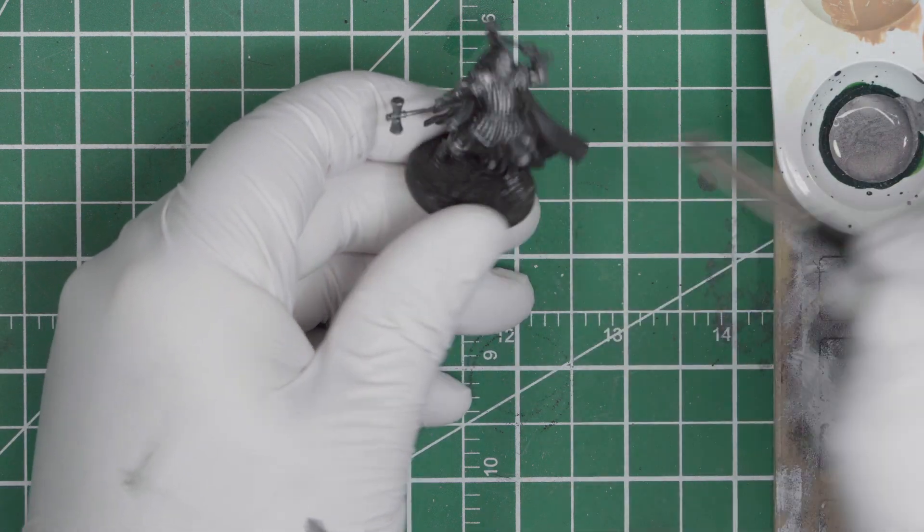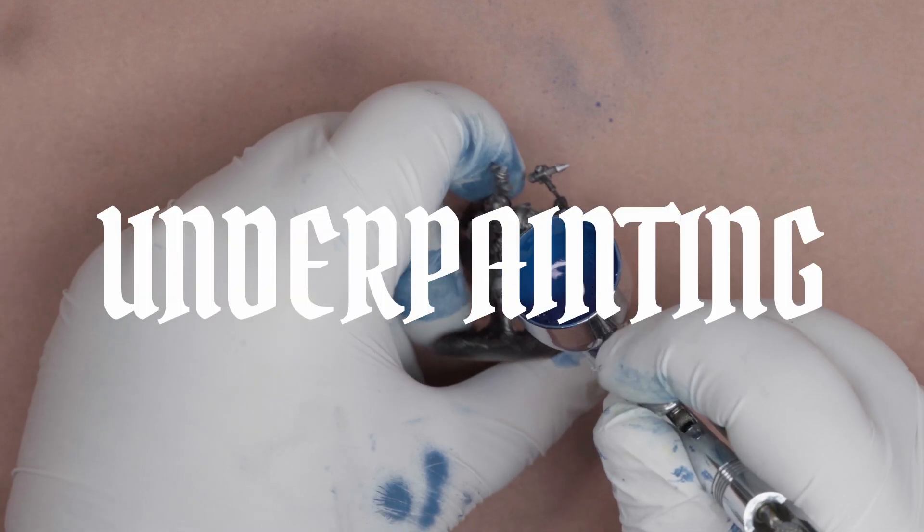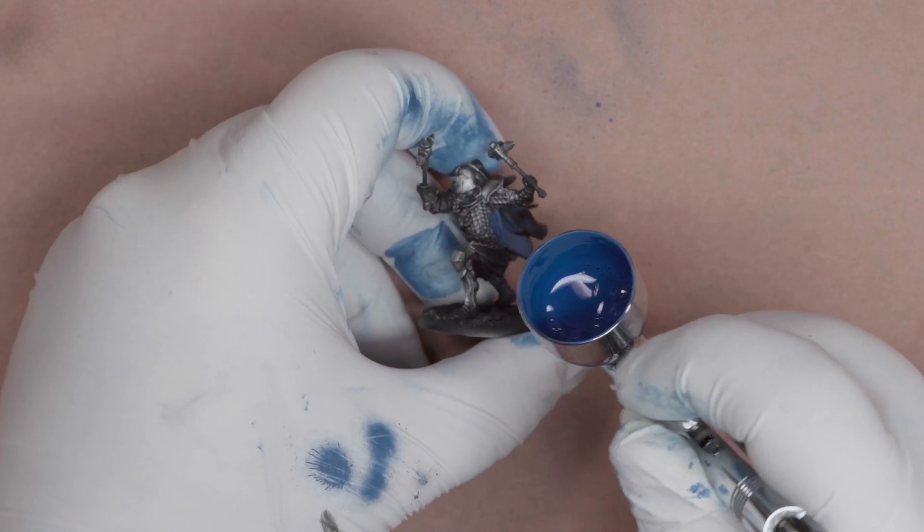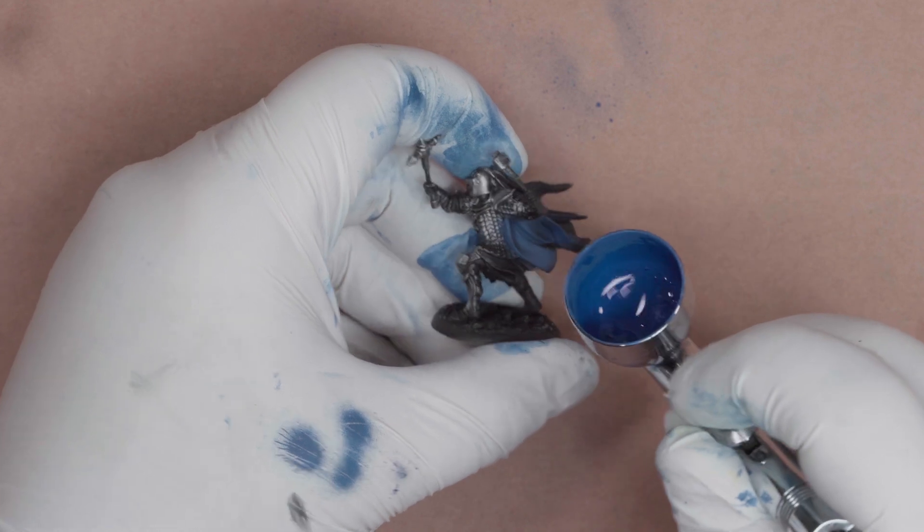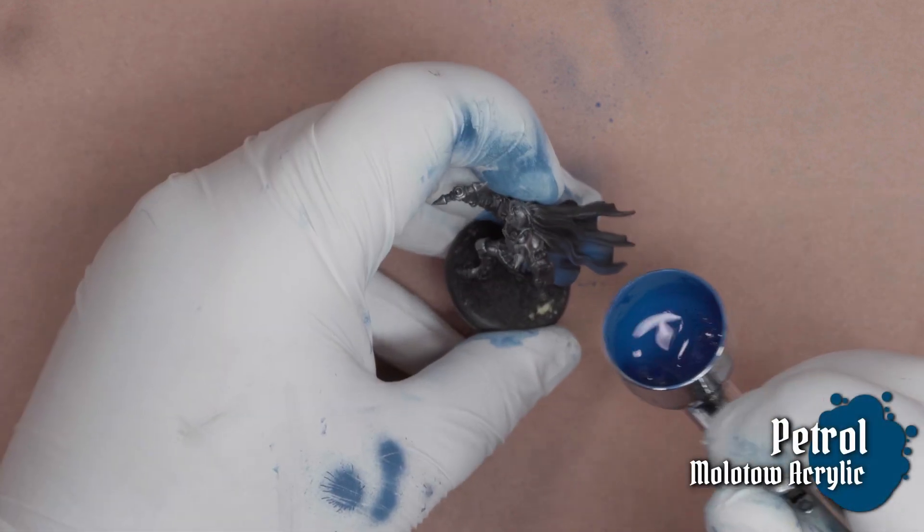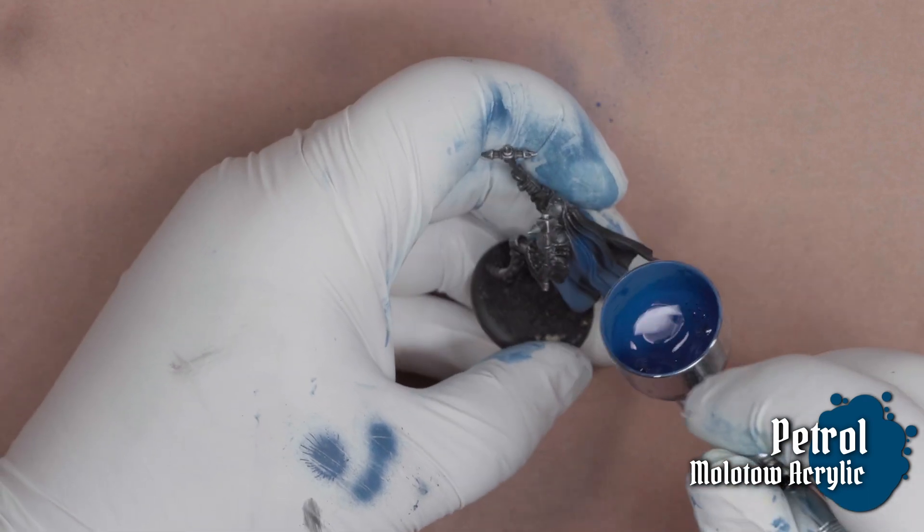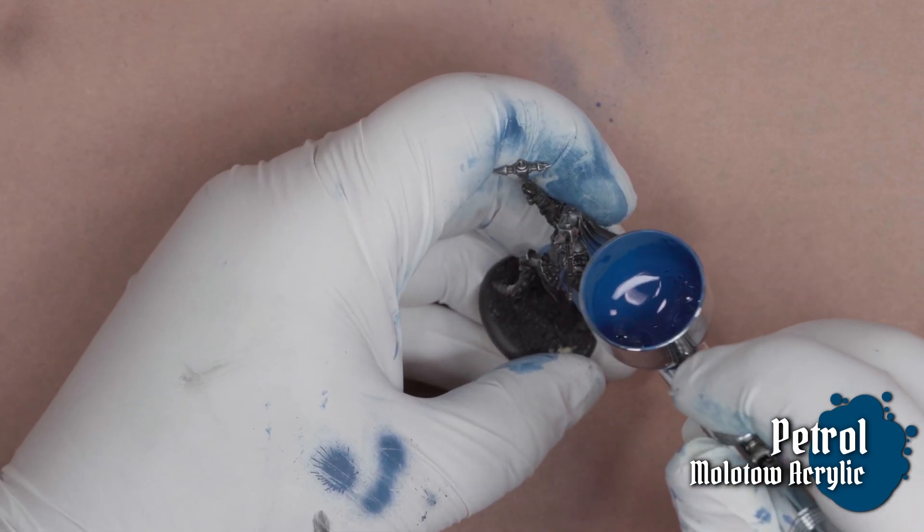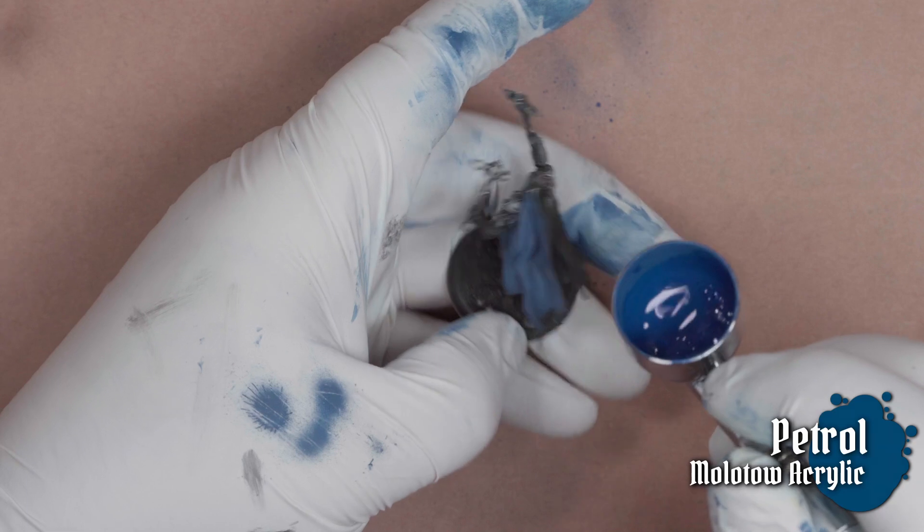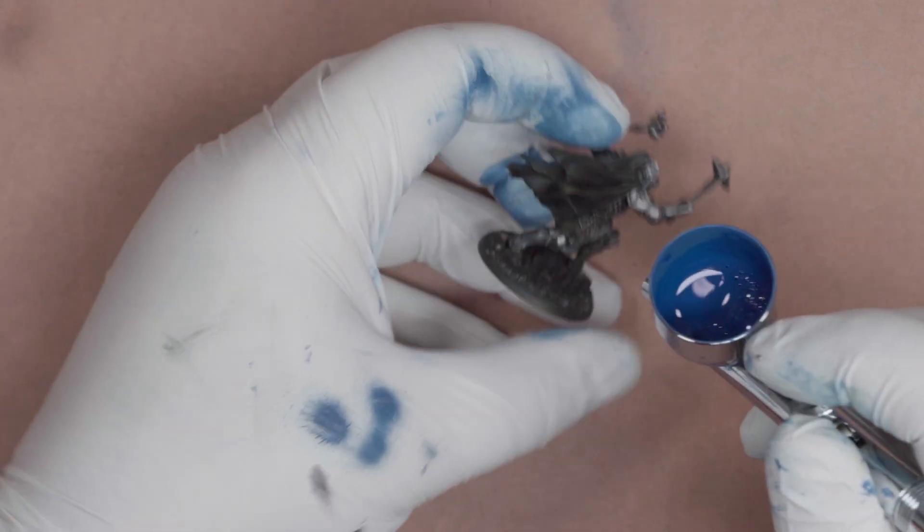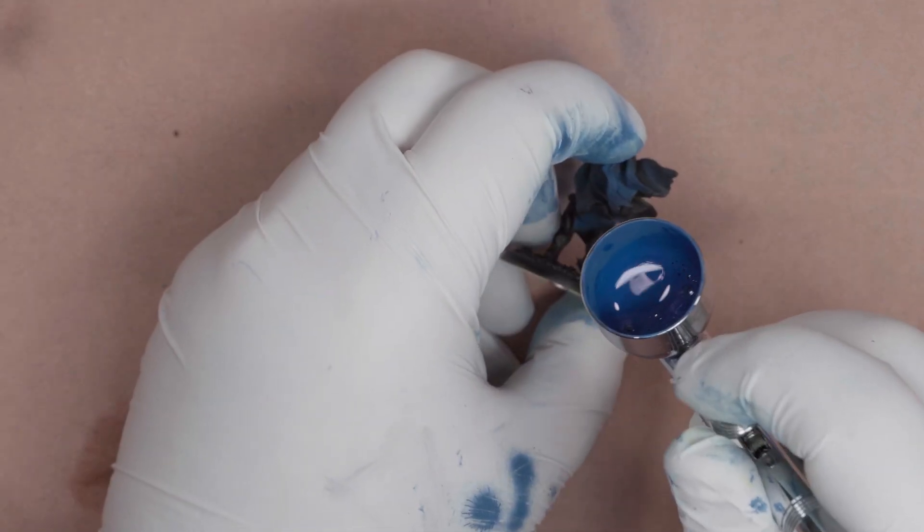Of course, there's a lot more than just metals on this guy. So we have to take a couple of steps to make sure that our workflow is going to function for those parts as well. Now I fully expect that I'm going to lose some people here when I break the airbrush back out after I've already painted part of the figure. But there is a method to my madness.